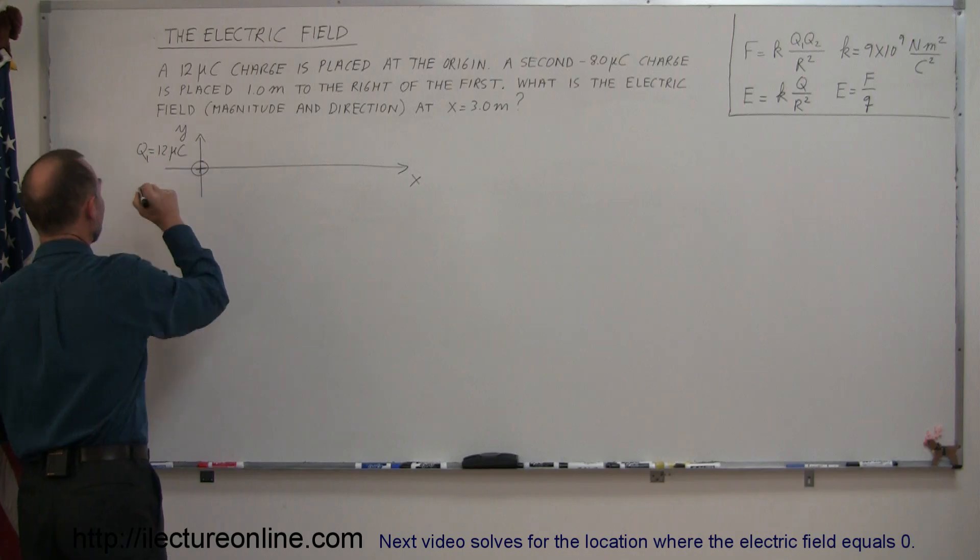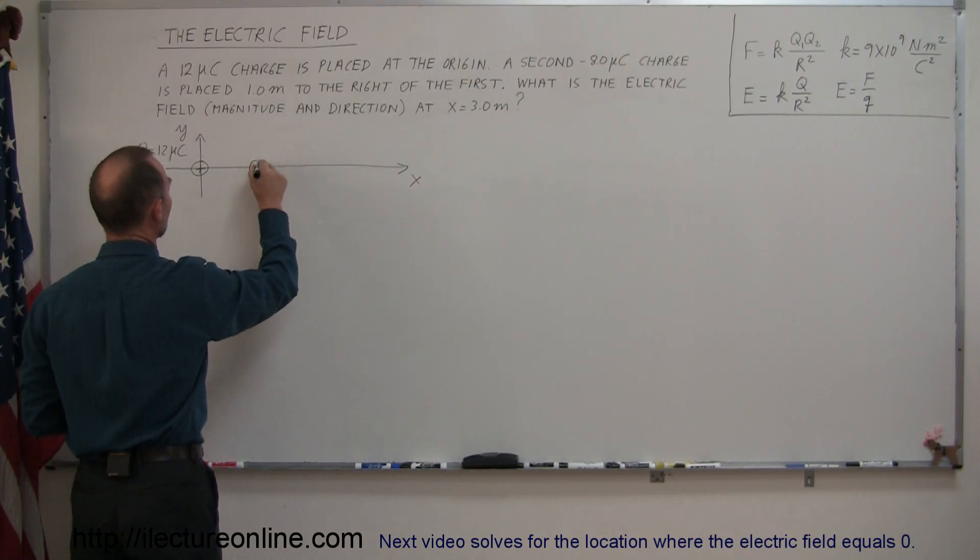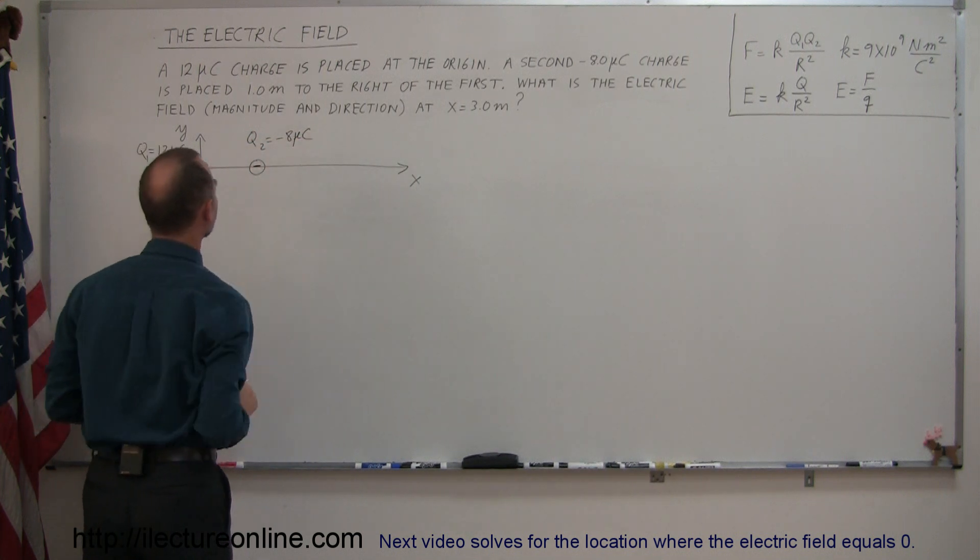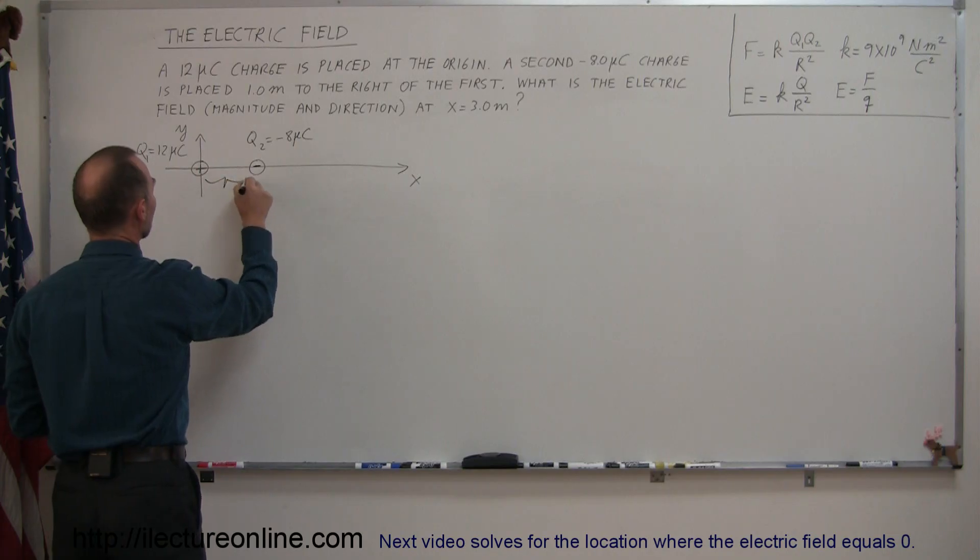We have a second charge one meter to the right, which is a negative charge. Call that q2, equal to minus 8 microcoulombs. Distance between them: one meter.